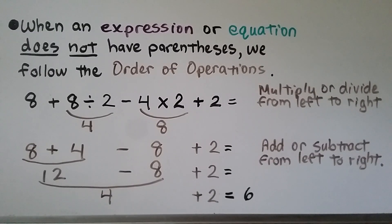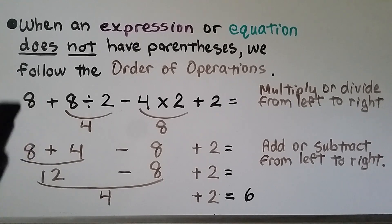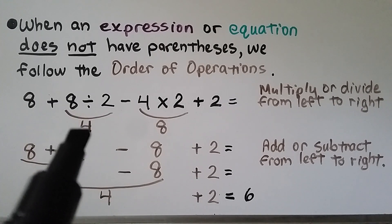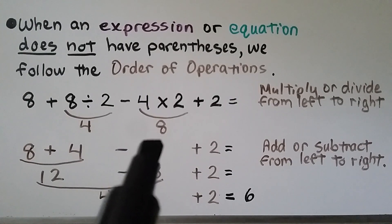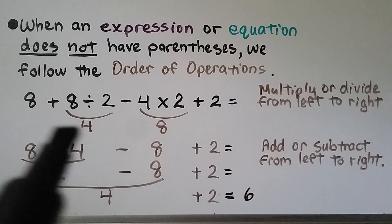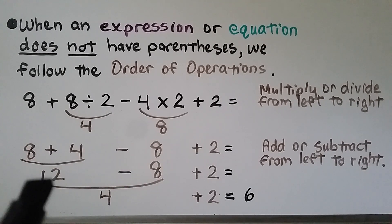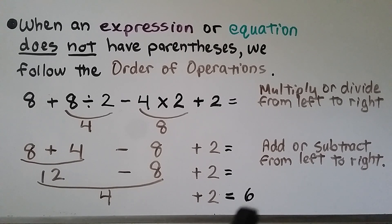When an expression or equation has no parentheses, follow the order of operations. For an example with division: we see 8 divided by 2, so we do that first — that's 4. Then we see 4 times 2, which is 8. Now we have 8 plus 4, which is 12. Then 12 minus 8 plus 2: we add and subtract from left to right — 12 minus 8 equals 4, then 4 plus 2 equals 6.